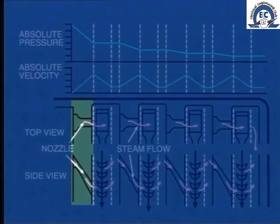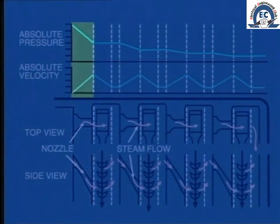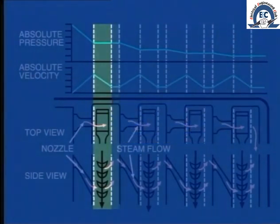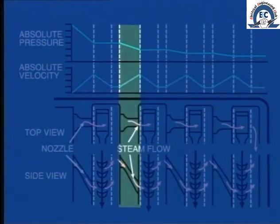As the steam passes through the first row of stationary blades or nozzles, its pressure decreases and as a result, the steam velocity increases. These changes are plotted on this graph. As this high velocity steam is directed onto the moving blade, the impulse pushes the blade forward and consequently produces rotation of the shaft. By the time the steam leaves the moving blade, it has lost much of its velocity and it then passes on through the next row of stationary blades.